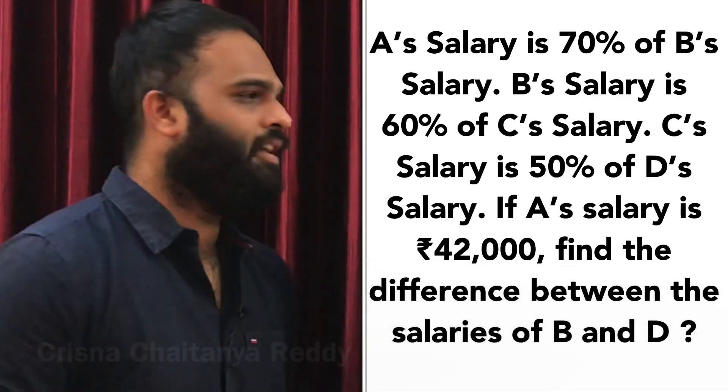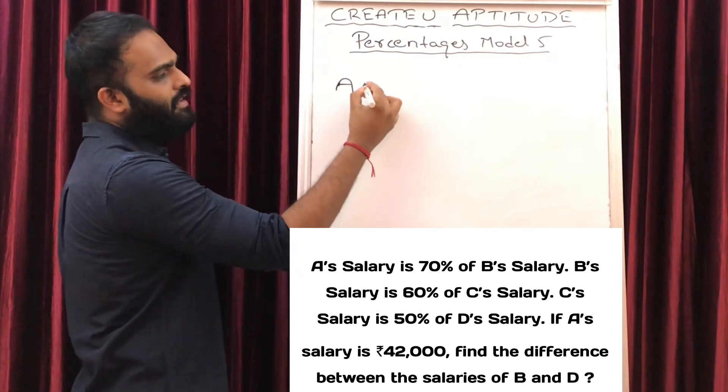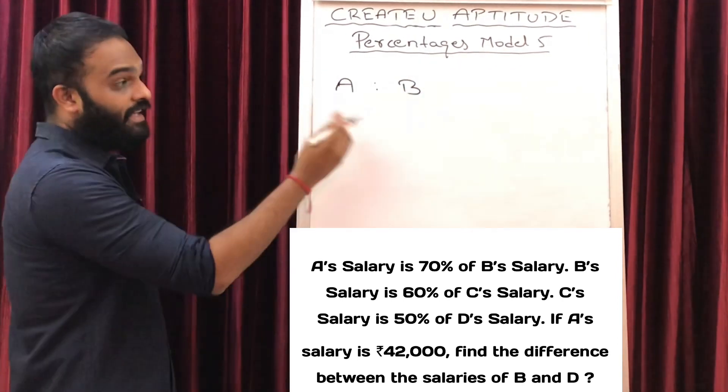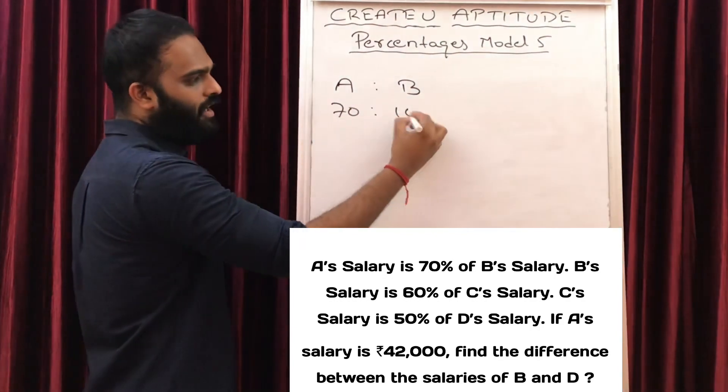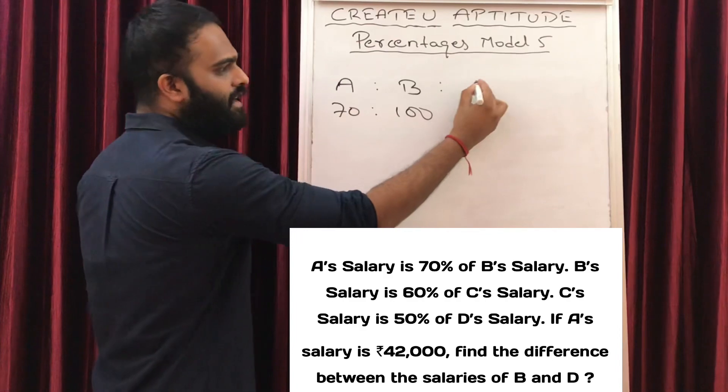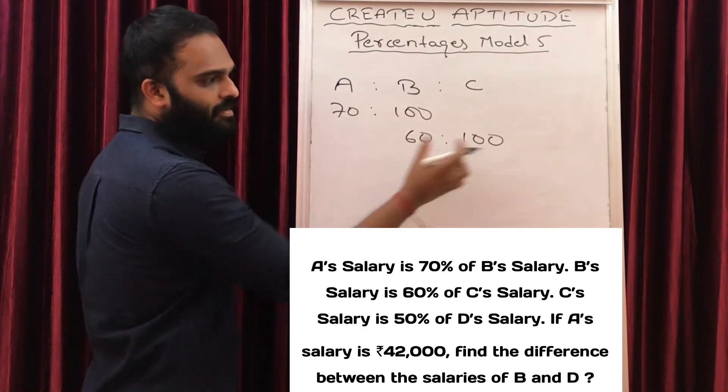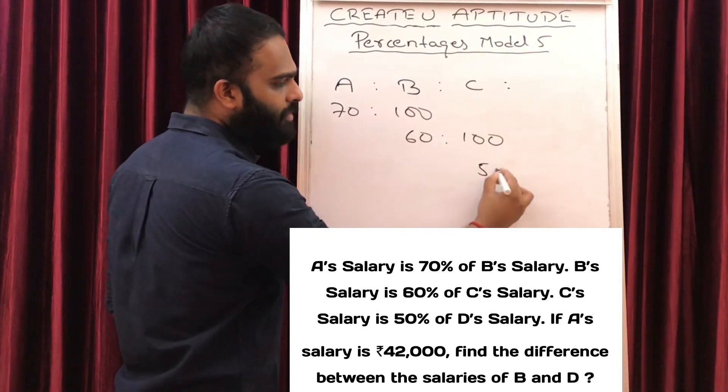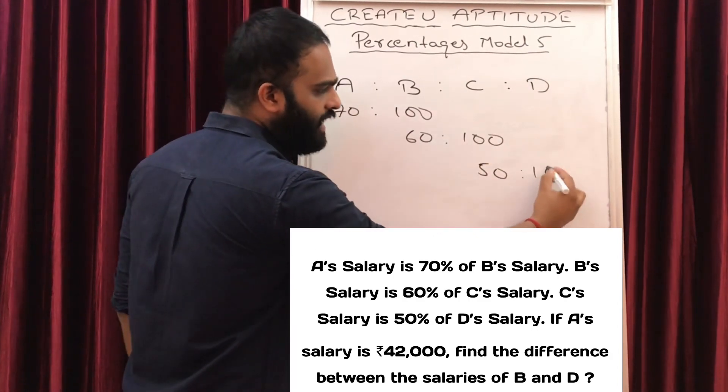Suppose A's salary is 70% of B's salary. If A's 70, B's 100. B's salary is 60% of C's salary. If B's 60, C's 100. C's salary is 50% of D's salary. If C's 50, D's 100.